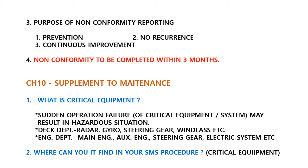Chapter 10 — Supplement to Maintenance. What is critical equipment? The definition: sudden operation failure of critical equipment or a system may result in a hazardous situation — that kind of equipment and system is called critical equipment. For example, in the deck department: radar, gyro, steering gear, windlass, etc. Engine department: main engine, auxiliary engine, steering gear, electric system, etc. This critical equipment is already identified by the company, because this is a requirement from ISM Code Chapter 10.